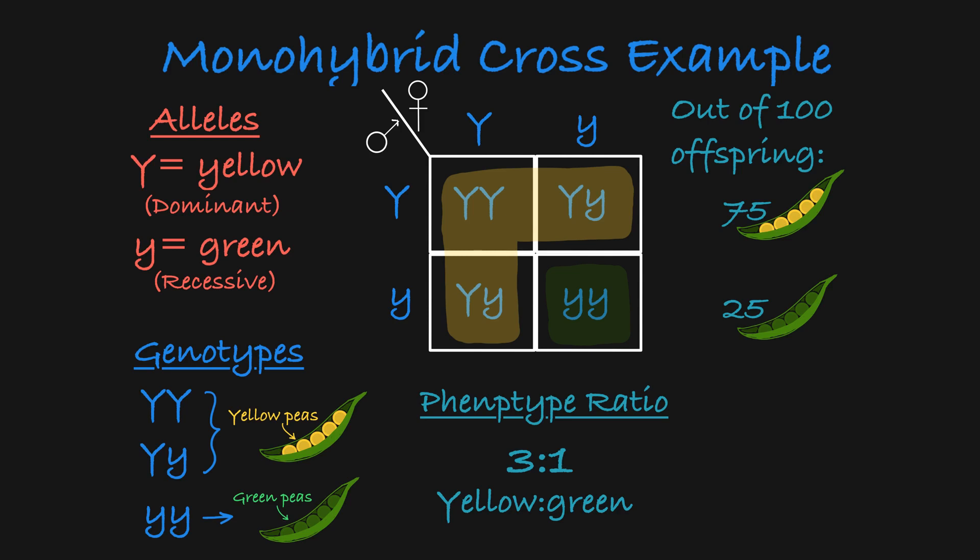Likewise, any time you see two organisms of the same phenotype for a given gene produce an offspring phenotype ratio of three to one, you can expect that both parents in that cross are heterozygotes.